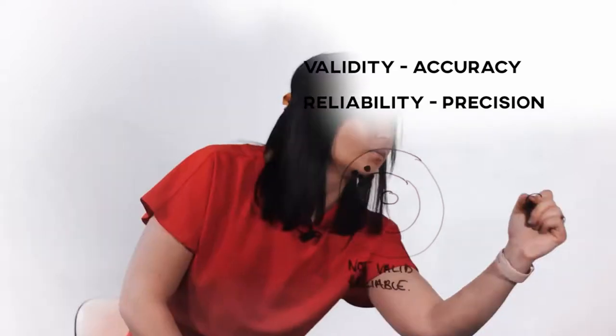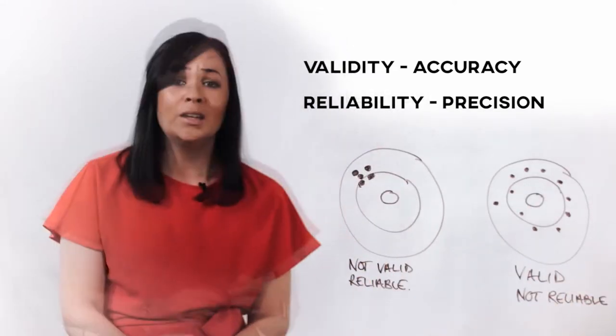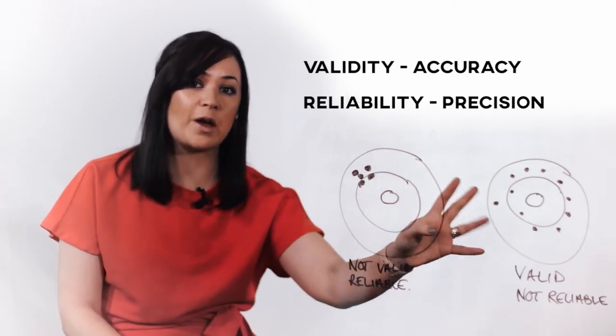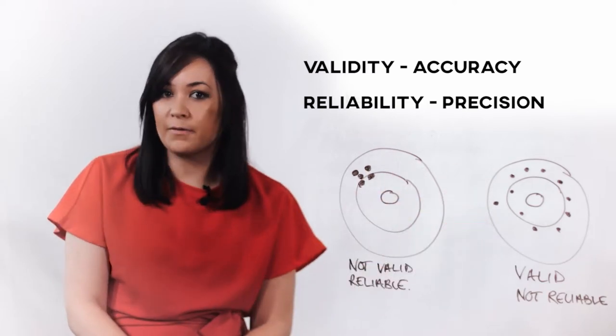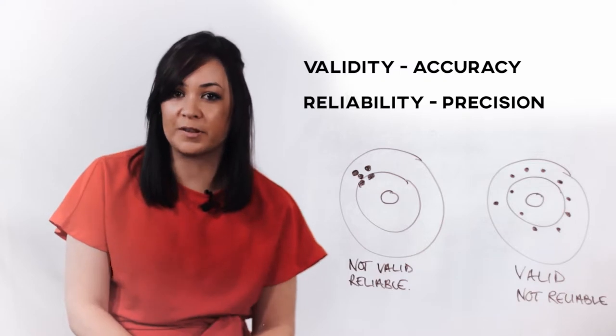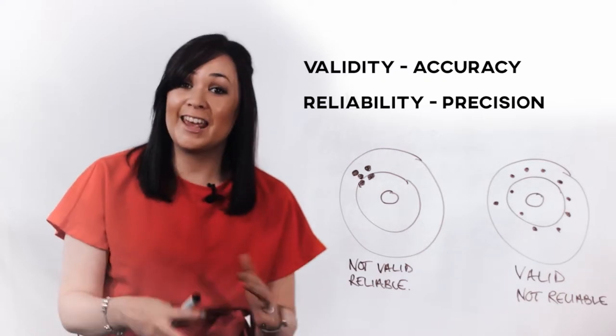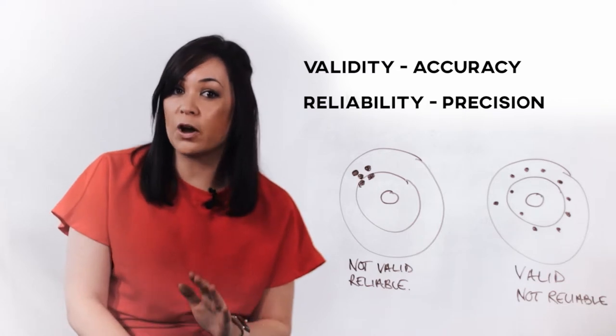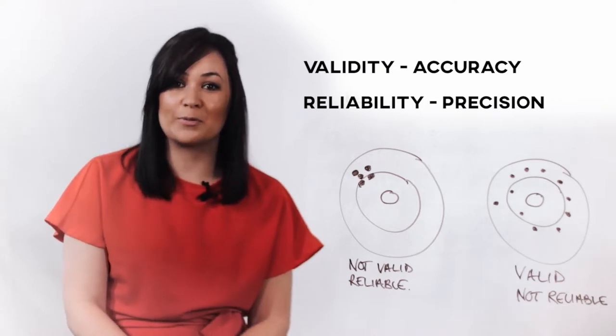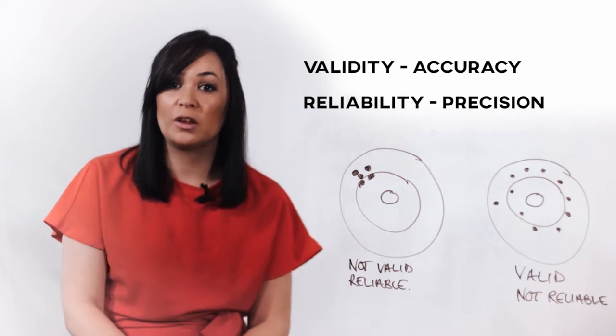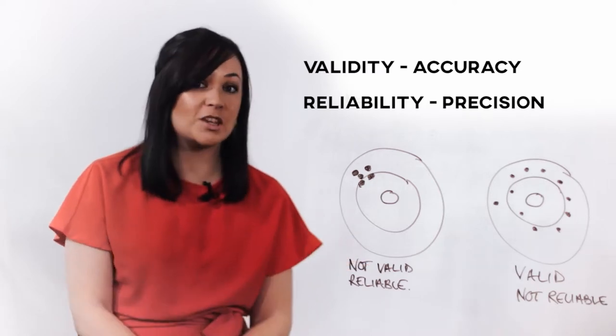Now, let's consider another case. Now, on average, these marks are clustered around the bullseye, meaning that this survey appears to be measuring customer satisfaction. It is a valid survey. However, even though the survey produces the desired result on average, it isn't reliable because it lacks precision. The marks are too far apart from each other.